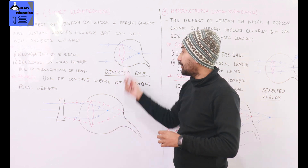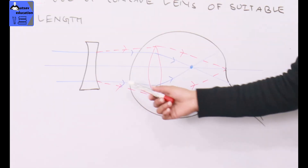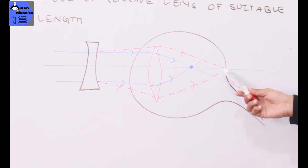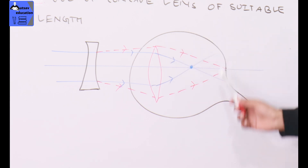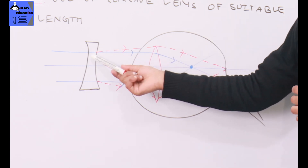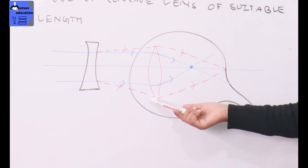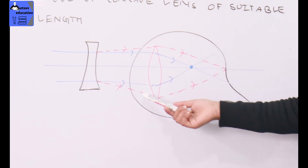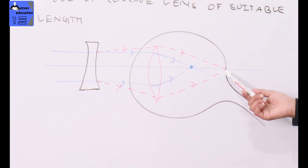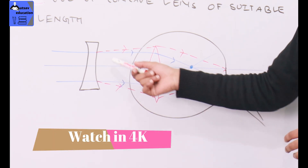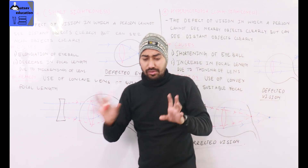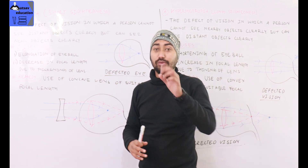The remedy for myopia is to use a concave lens of suitable focal length. In the diagram of the defected eye, the ray of light converges in front of the retina. The concave lens diverges the light so that the image can now form correctly on the retina. This is how we remedy myopia.